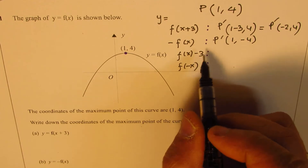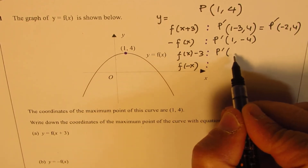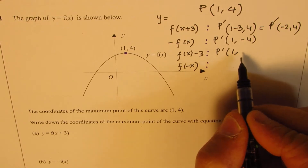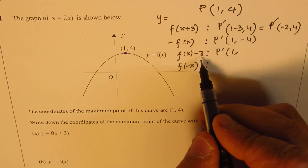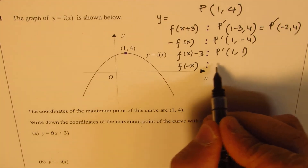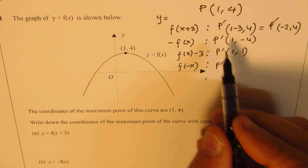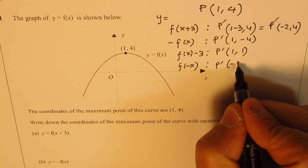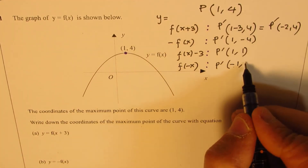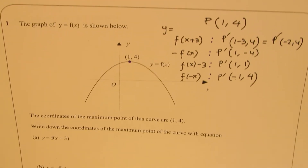For f(x) - 3: the graph moves 3 units down, so the x value remains the same and y reduces by 3, giving (1, 4 - 3) = (1, 1). For f(-x): the x value is reflected on the y-axis, becoming negative of whatever it is — 1 becomes -1 — and y remains the same, giving (-1, 4). Each question was just one mark each.